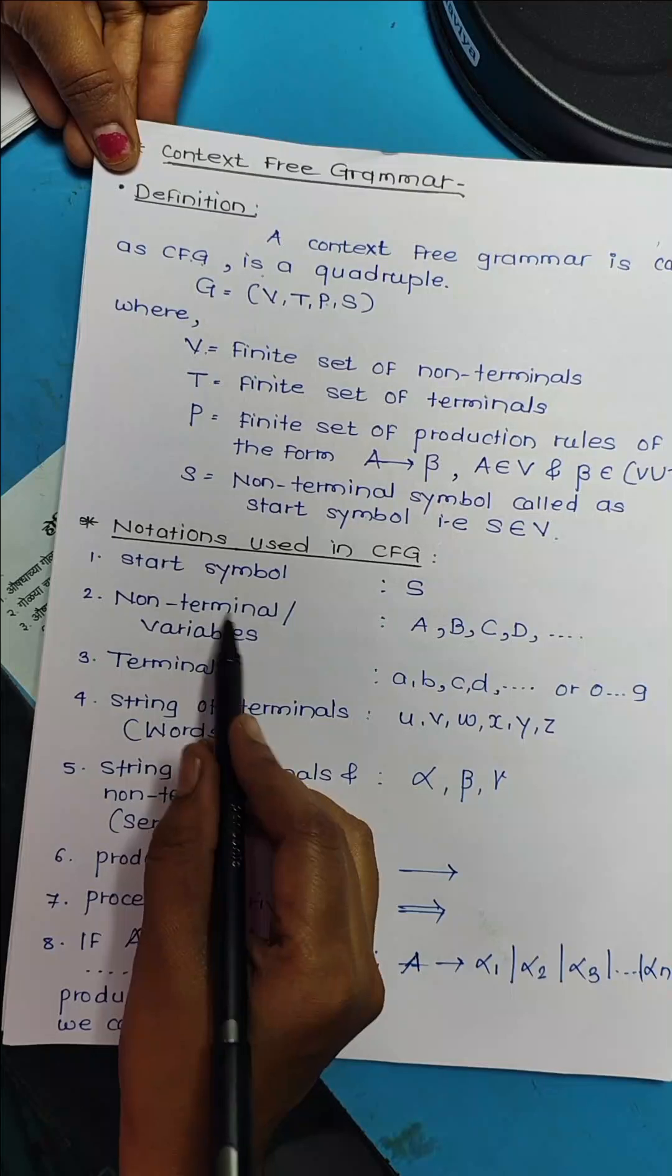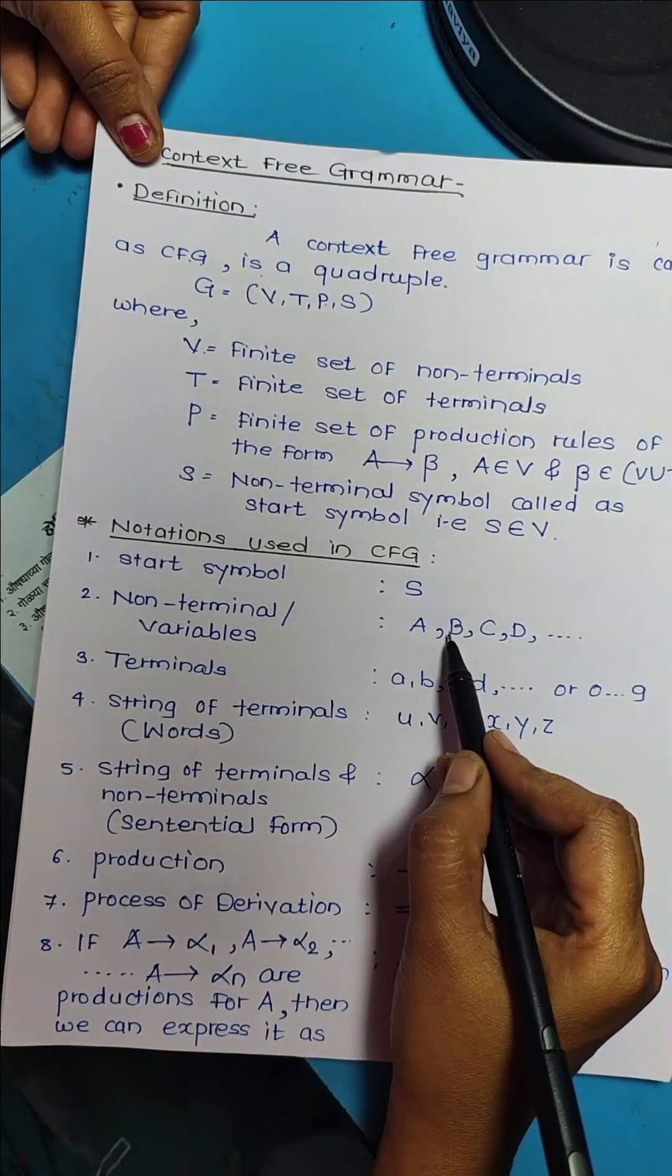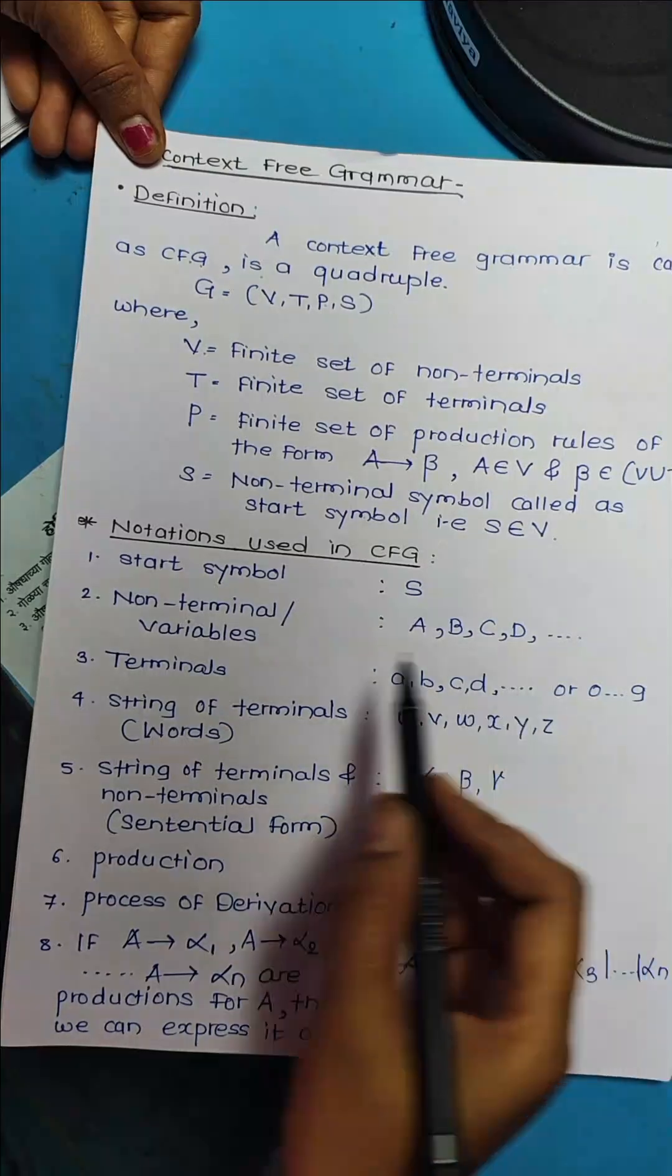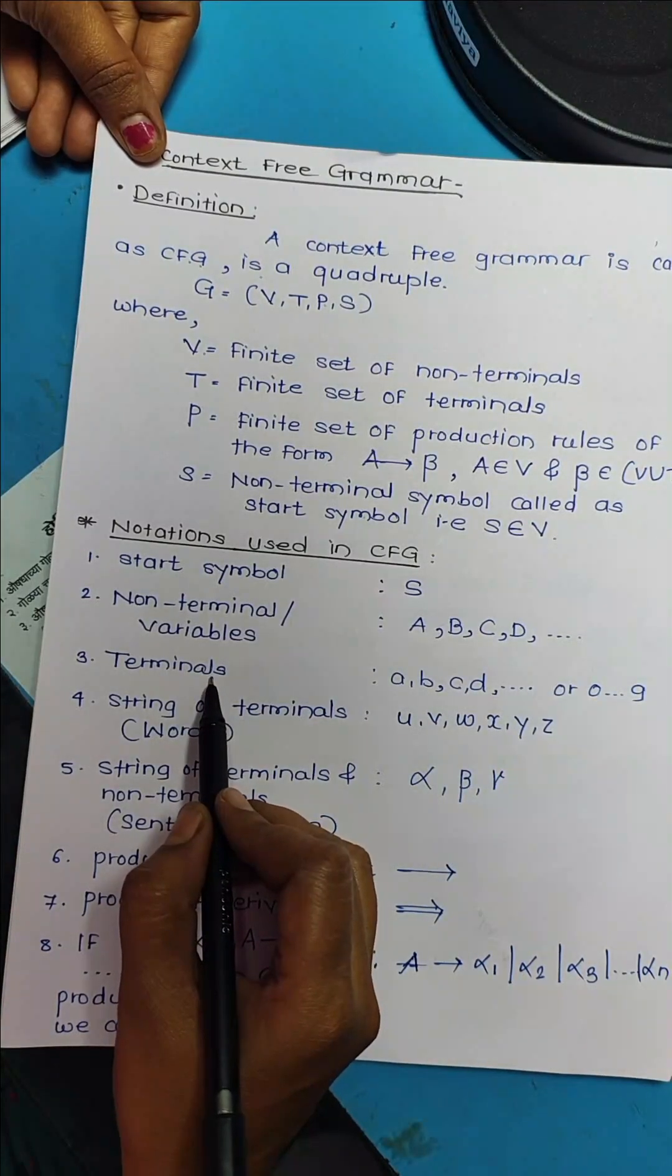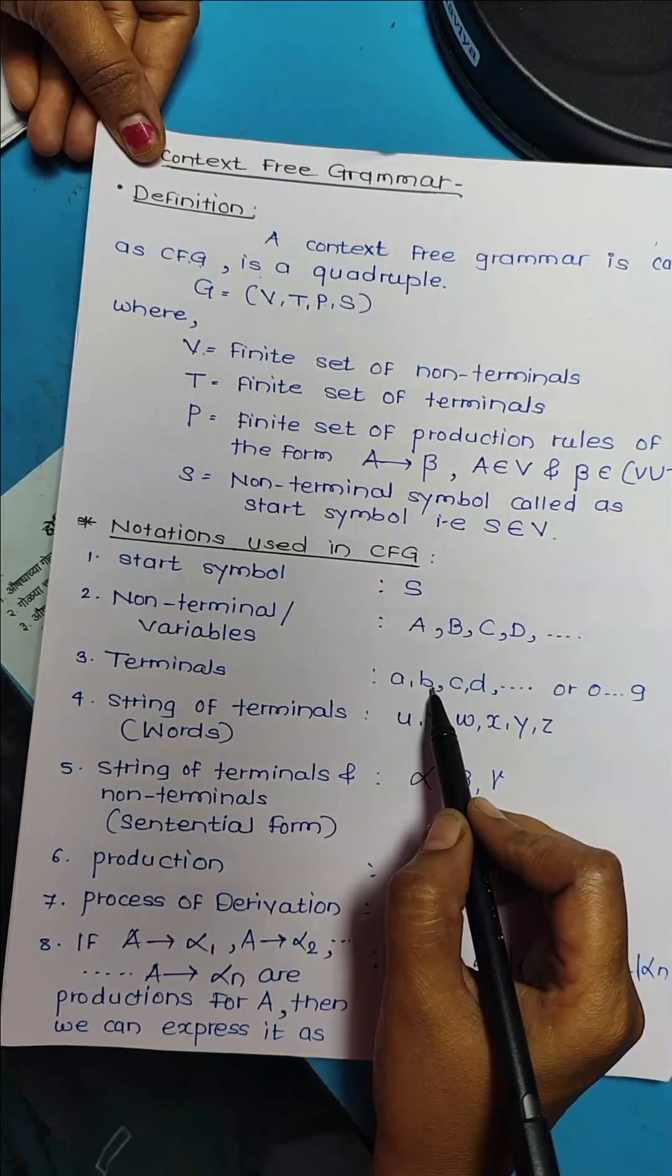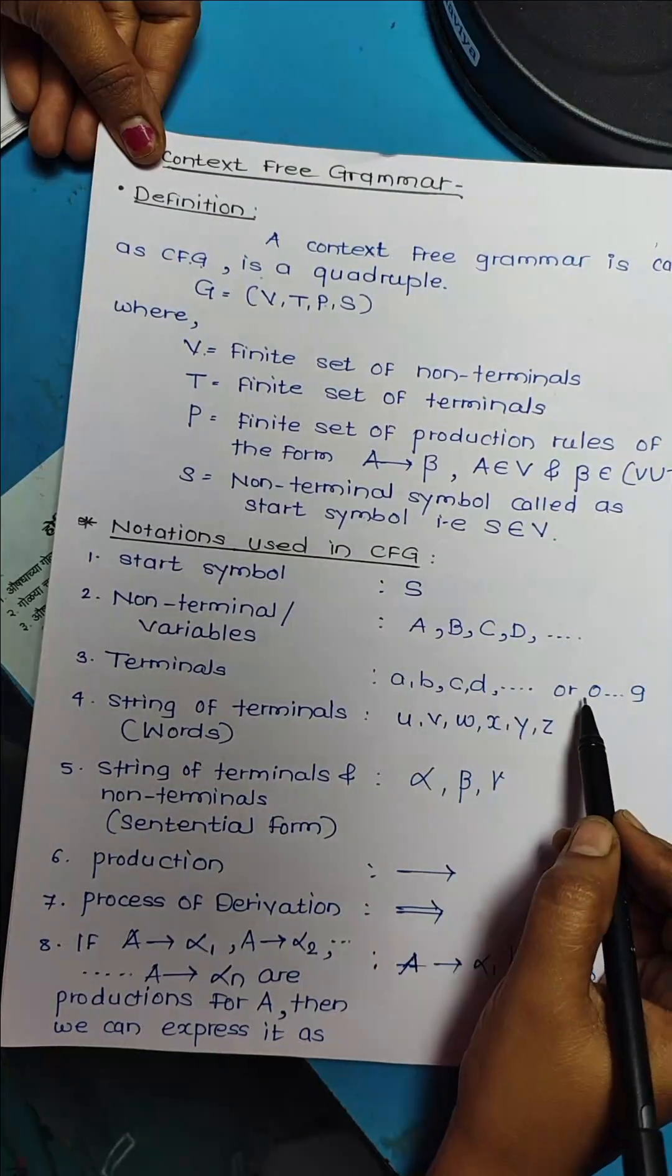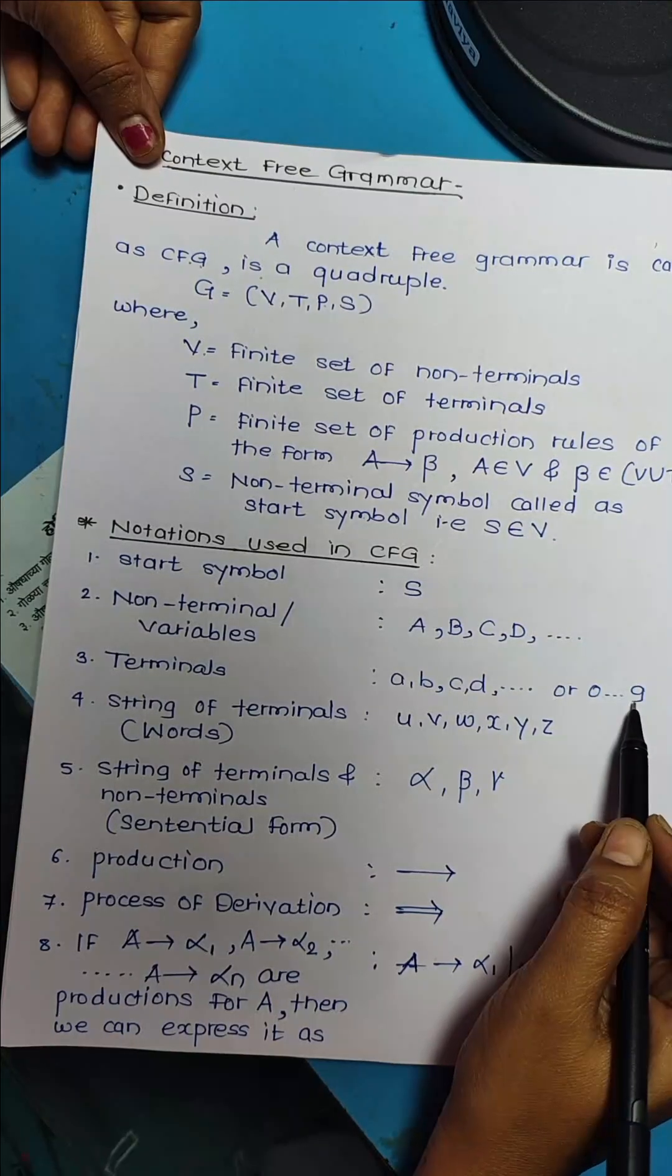Then, non-terminals or variables are represented using capital letters, that is A, B, C, D, and so on. Then terminals are represented using small letters of the alphabet, like small a, small b, small c, and so on, or digits like 0 to 9.